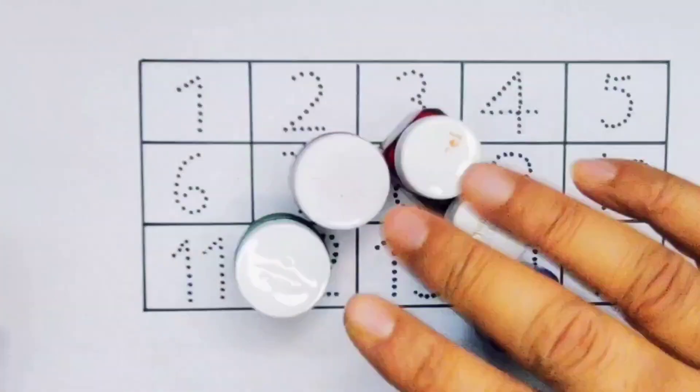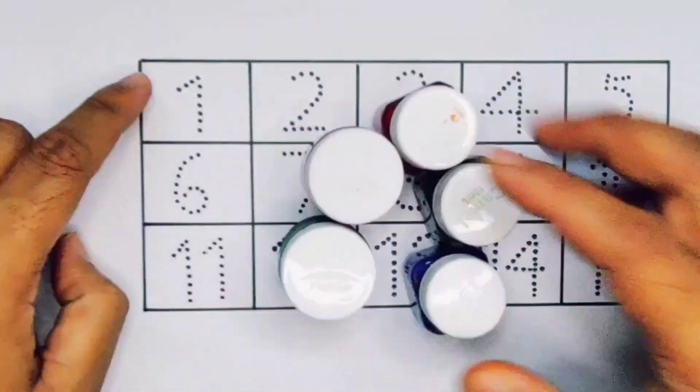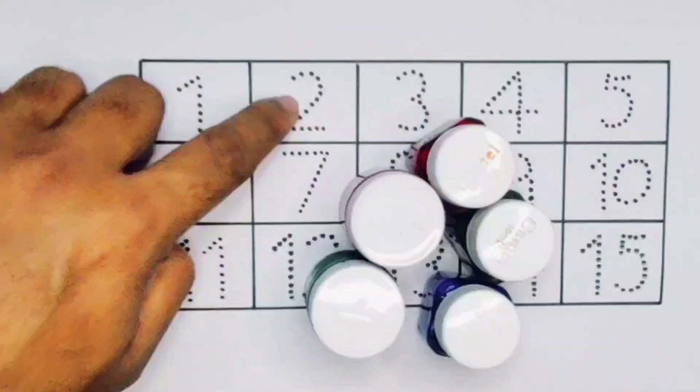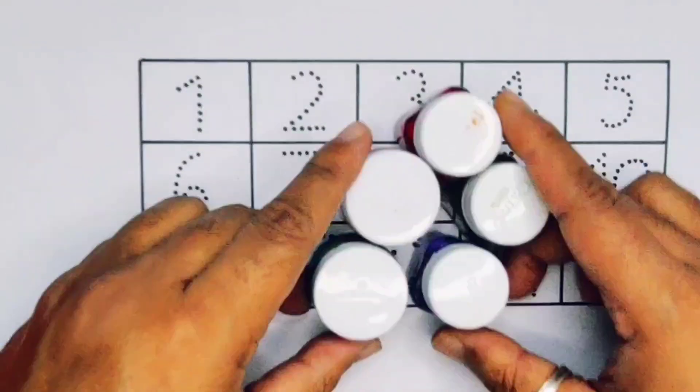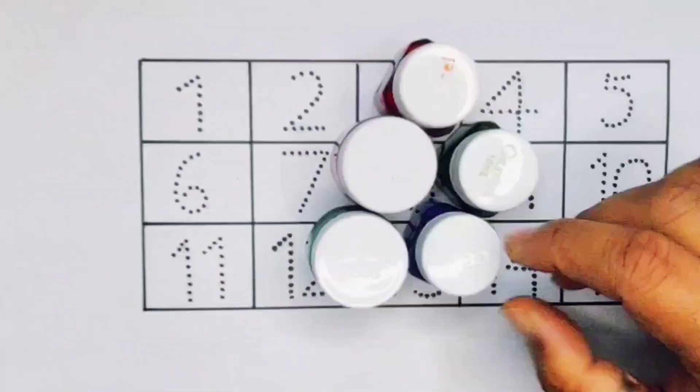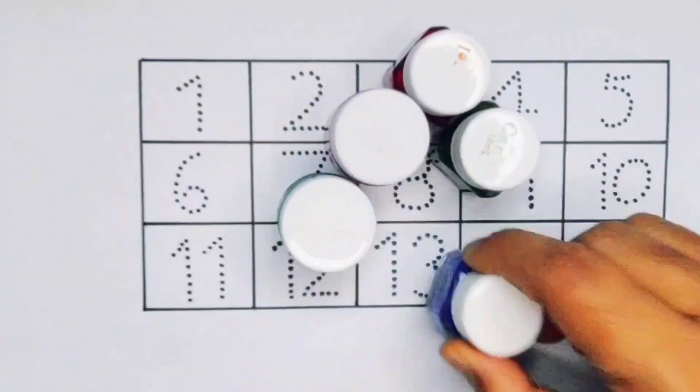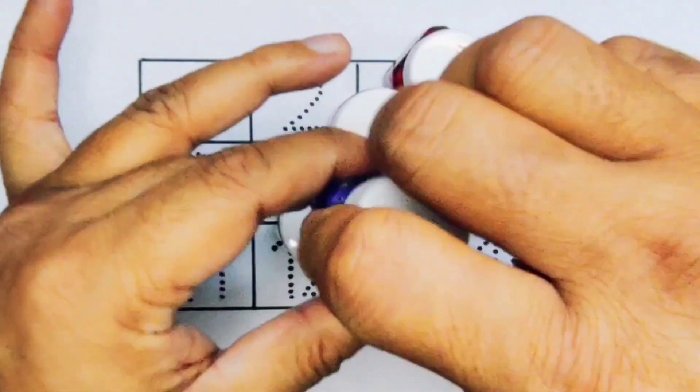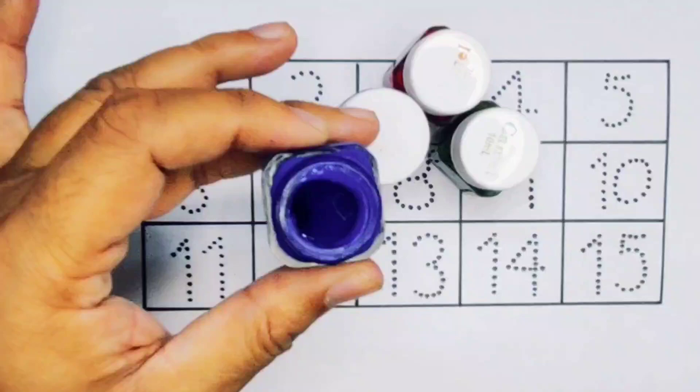Hello kids, welcome to my new video. Today we are going to learn numbers counting 1 to 15. First we're going to know the colors. Blue color, this is blue color.